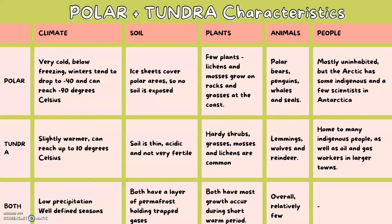When we're talking about characteristics, that means the climate, soil, plants, animals and people. For polar environments, the climate is very cold, below freezing. Winters tend to drop to minus 40 degrees and can reach minus 90 degrees Celsius. Ice sheets cover polar areas so no soil is exposed.